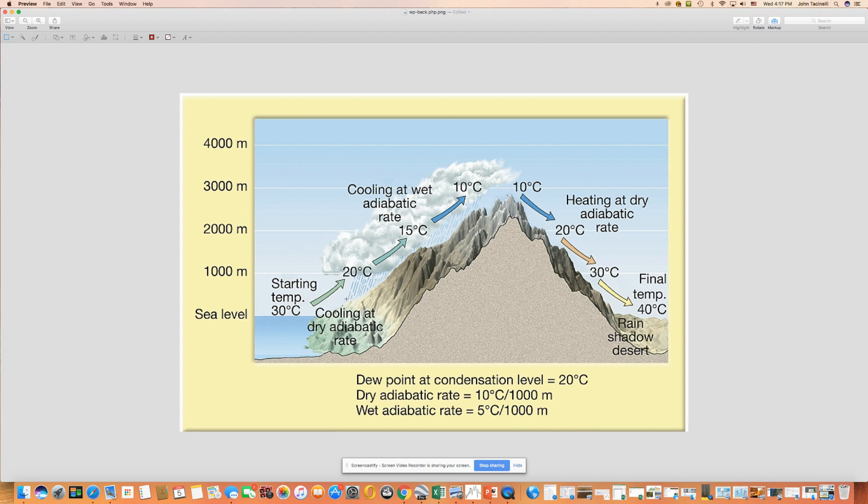In order to get to condensation, it's got to cool off by 10 degrees, from 30 all the way down to 20. So it's got to go up 1,000 meters. As it rises up, it's going to cool off by one degree for every 100 meters. And when it hits 1,000 meters, it will have cooled to the dew point temperature.